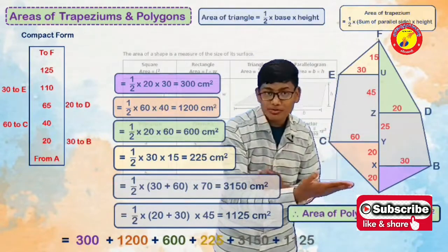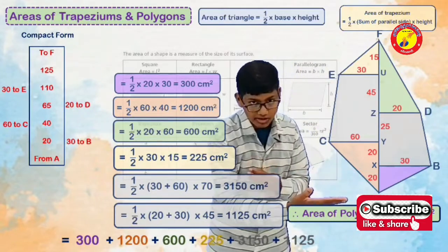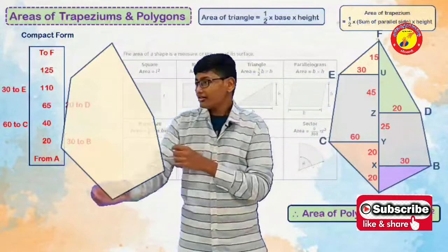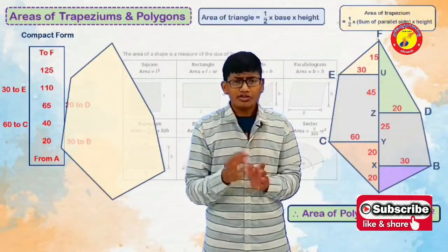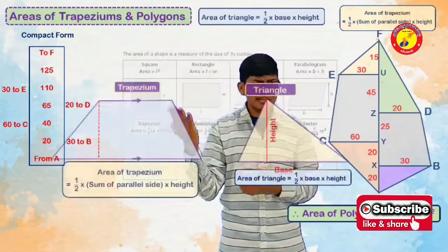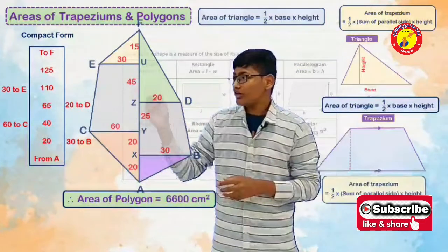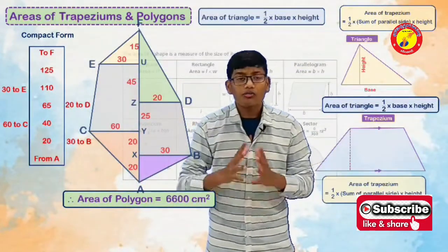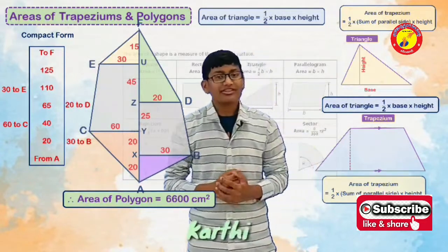This 6600 cm square is nothing but the area of the polygon which we first discussed about. Here we calculated this in a simple way with only two formulas: area of triangle and area of trapezium. This is how we calculate the area of this type of polygons using one or more formulas. Hope you enjoyed this video. Thank you.